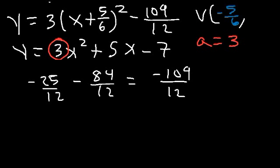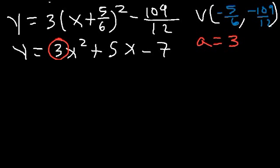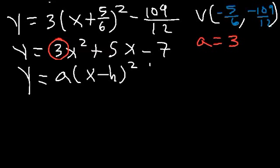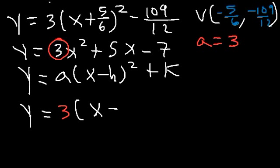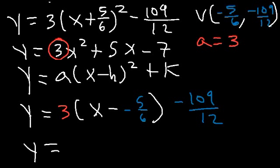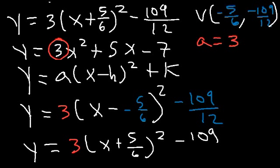So the y-coordinate of the vertex is negative 109 over 12. Now we can write the equation in vertex form: y equals a times x minus h, squared, plus k. a is 3, h is negative 5 over 6, and k is negative 109 over 12. The answers match: it's 3 times x plus 5 over 6, squared, minus 109 over 12.